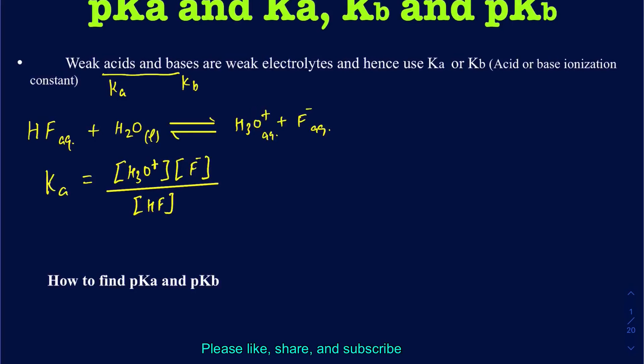Remember, this is an aqueous equilibrium, so liquid water is not included in the expression because it's just the solvent. If your Ka is high, you're going to have a high concentration of products — meaning a stronger acid. If the Ka is low, then your reactant concentration is going to be high, meaning a weaker acid.